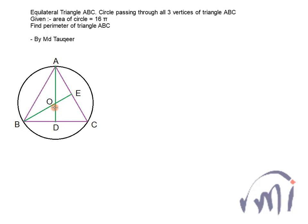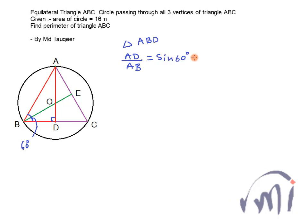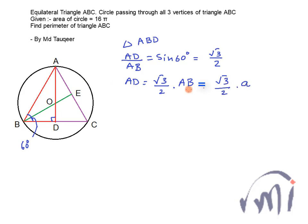Looking at triangle ABD, drawn in red, the angle at D is 90 degrees because AD is a perpendicular bisector of BC. At the same time, since it is an equilateral triangle, the angle at B is 60 degrees. Since this is a right-angle triangle, AD/AB = sin 60° = √3/2, which means AD = (√3/2)·AB. If we assume the length of each side of the equilateral triangle is A, then AD = (√3/2)·A.